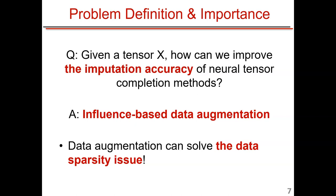This leads to our natural research question: how can we solve this data sparsity issue? Given a very sparse tensor, how can we improve the imputation accuracy of existing neural tensor completion methods? Our answer is to use an influence-based data augmentation technique, applying ideas from deep learning where data augmentation plays a critical role in solving data sparsity.